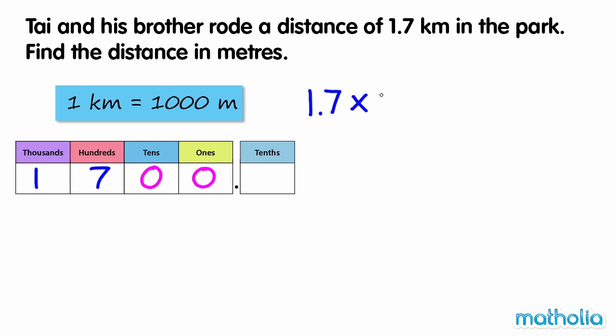1.7 times one thousand equals one thousand seven hundred. So 1.7 kilometres equals one thousand seven hundred metres.